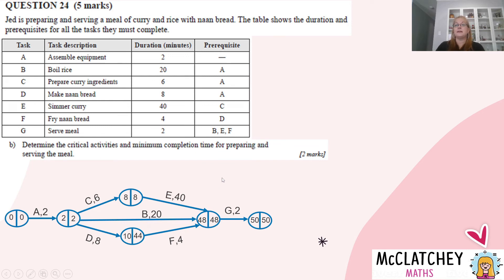Part B now asks us to determine the critical activities or the critical path, and the minimum completion time to get the whole thing done, the whole meal preparing and serving. So we already worked out where the critical path was, but we can double check that it's wherever these two halves of the bubble are the same. So that's our critical path across there. But we do need to state that really clearly. So we're going to state that the critical path is A, C, E, G, and we get our fourth mark for determining the critical activities.